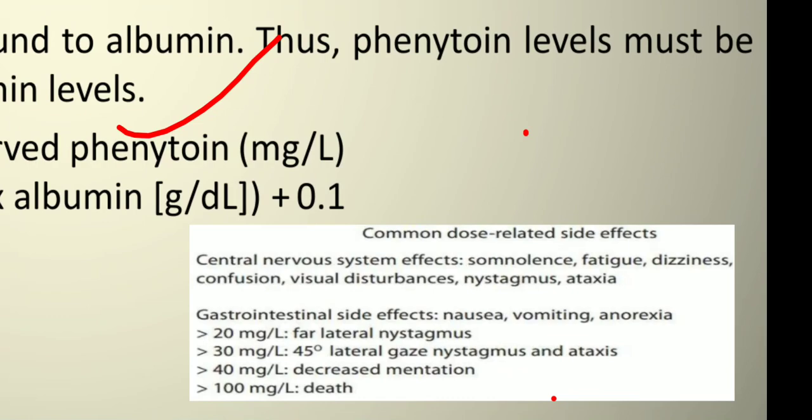Nystagmus involves involuntary eye movement — it can move up and down or side to side. Ataxia refers to impaired coordination; a person with ataxia cannot coordinate properly. Gastrointestinal side effects include nausea, vomiting, and anorexia. Anorexia is an eating disorder in which the patient has an obsessive fear of weight gain and does not eat adequately.